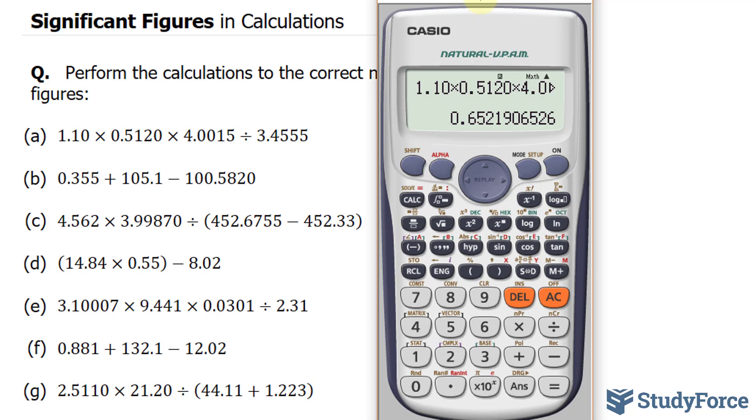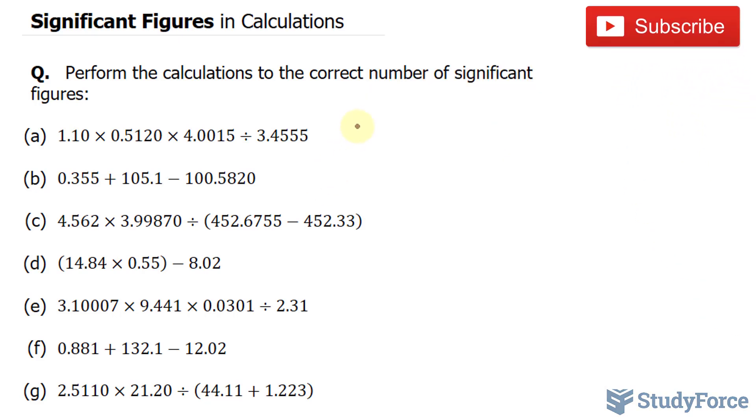Now because we have to stop writing after the third significant figure, everything after this 2 is insignificant. Also, because this 1 is less than 5, we will leave this number as 0.652. That's our final answer, 0.652.